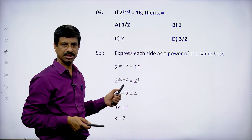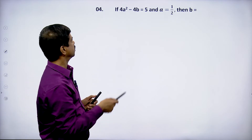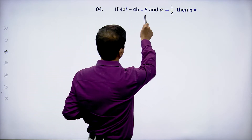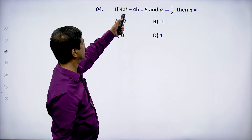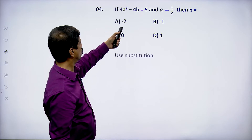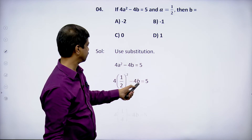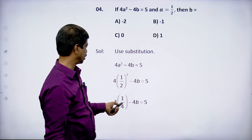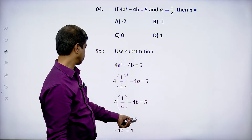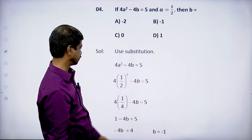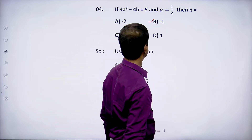Let us move to the next question. Given 4a² - 4b = 5 and a = 1/2, find b. Substitute a: 4·(1/2)² = 4·(1/4) = 1. So 1 - 4b = 5, giving -4b = 4, so b = -1. Option B satisfies.